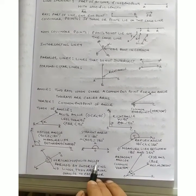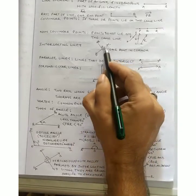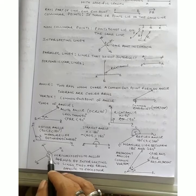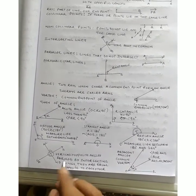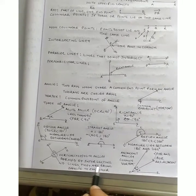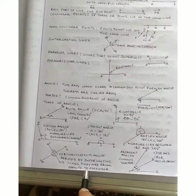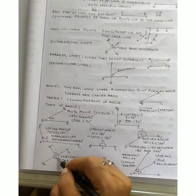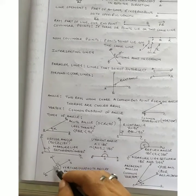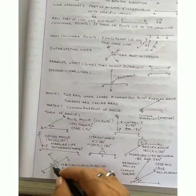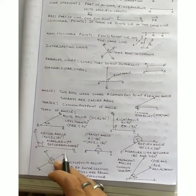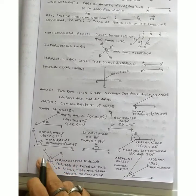Vertically opposite angle. Jab do lines intersect ho rahi hai, toh ye angles form kar raha hai. Ye angles jo form kar raha hai, toh ye hum kehte hain vertically opposite angles. Vertically opposite angles formed by intersecting lines. They are equal and opposite to each other. Ye angle opposite to each other. These are vertically opposite angles and they are equal. Jab do lines intersect hongi, toh jo angles opposite hongi wo equal hongi. Unhain hum kehte hain vertically opposite angles.